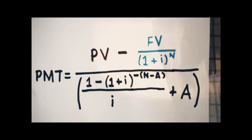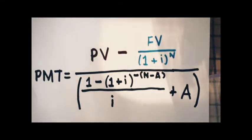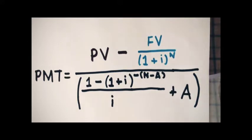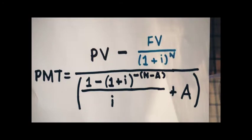i is your periodic interest rate, n is the number of payments — usually months — and a is the number of payments required in advance.